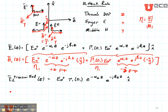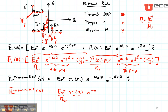Now let's do that for region 2. H2 transmitted is going to be E0 plus divided by Eta 2 in this case, times E to the minus Alpha 2 Z, times E to the minus j Beta 2 Z, and it's polarized in the Y direction. So there are our electric and magnetic fields right here at the boundary between region number 1 and region number 2.